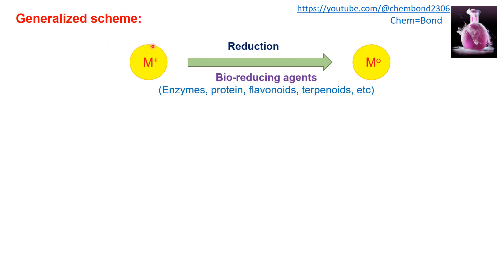Here is a generalized scheme for nanoparticle formation. In the first step, the metal ions used for nanoparticle formation are reduced to a metal zero form through a bioreduction process using bioreducing agents such as enzymes, proteins, flavonoids, and terpenoids. These bioreducing agents are derived from either microorganisms or plant leaf extracts.